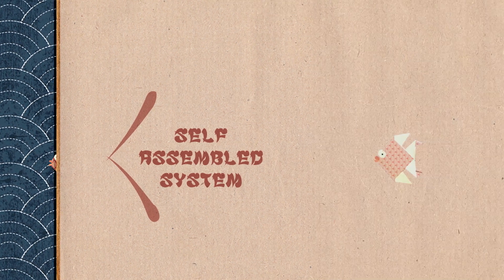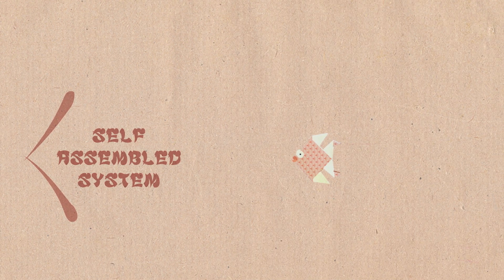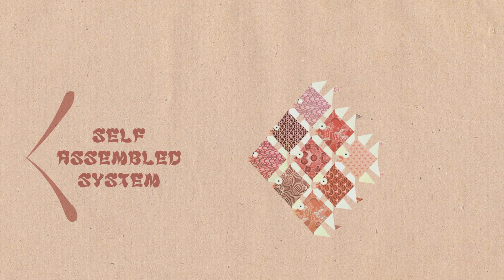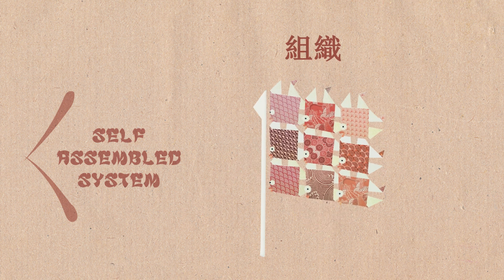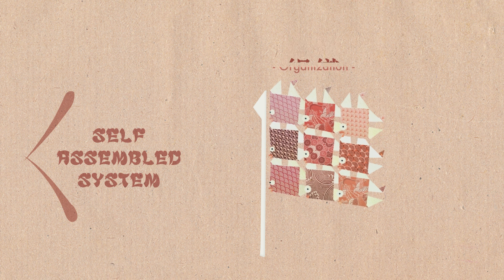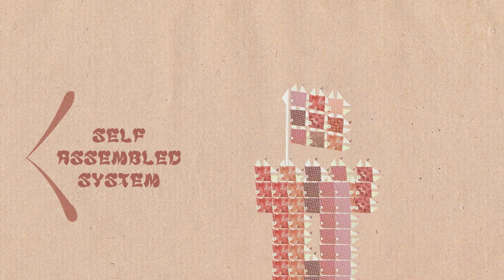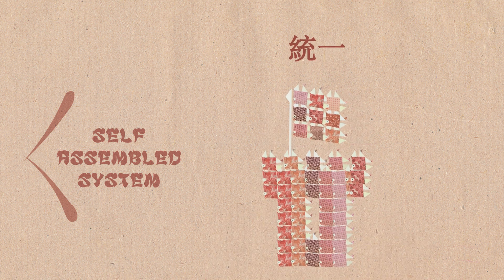How is that possible? You have to understand that self-assembling systems always have a reason to behave in such a way and organize themselves. For example, our fish may have done it to build a unity and feel stronger and more protected together.